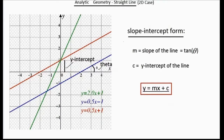Let's look at the analytic geometry of a straight line on the plane, the 2D case. The slope-intercept form of the line. The equation y equal to mx plus c is the slope-intercept form of a straight line on a plane. m is called the slope of the line and c is the intercept of the line on the y-axis.